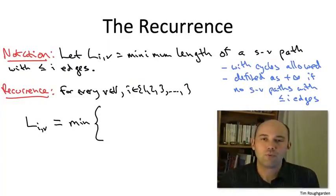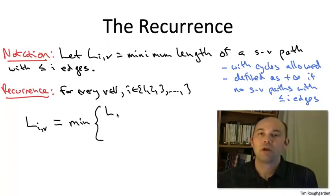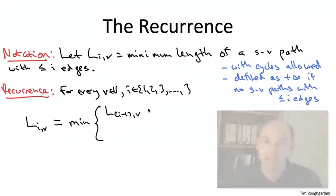The case one candidate is simple enough. One option is always just to inherit the best path we found from S to V that uses only I minus one edges or less.